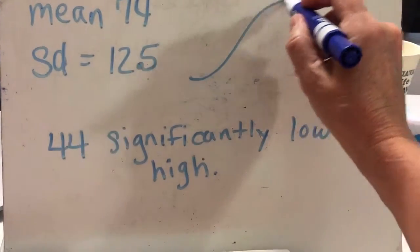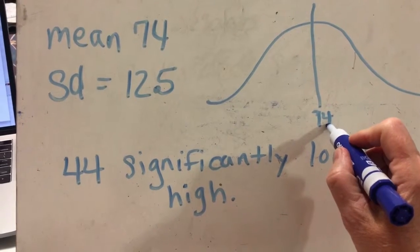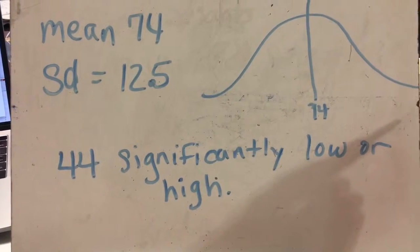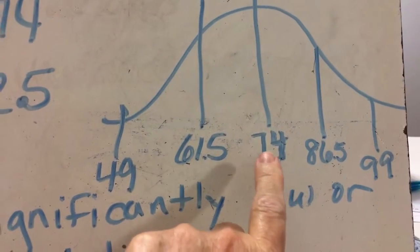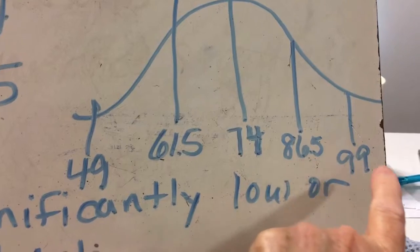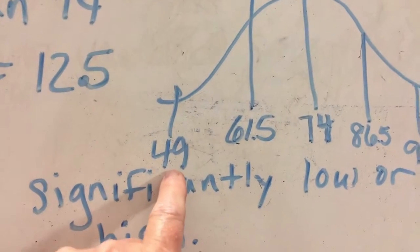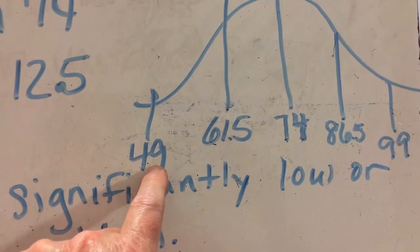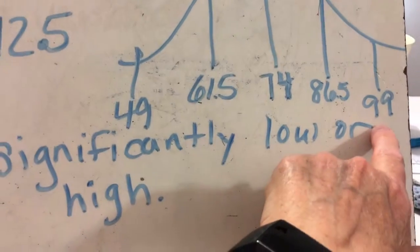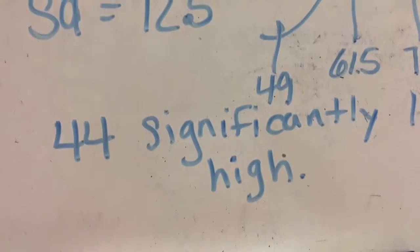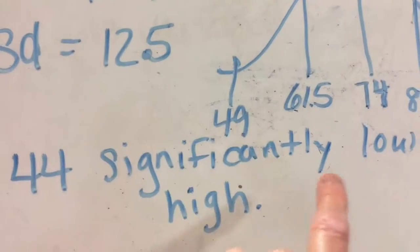I've drawn a standard curve on the board. Our mean is 74, and we go 12.5 to the right and 12.5 to the left each time. Starting at 74, adding 12.5 twice gives us 99 at the high end. Subtracting 12.5 twice gives us 49 at the low end. So the usual range is 49 to 99, and our value of 44 is below 49.